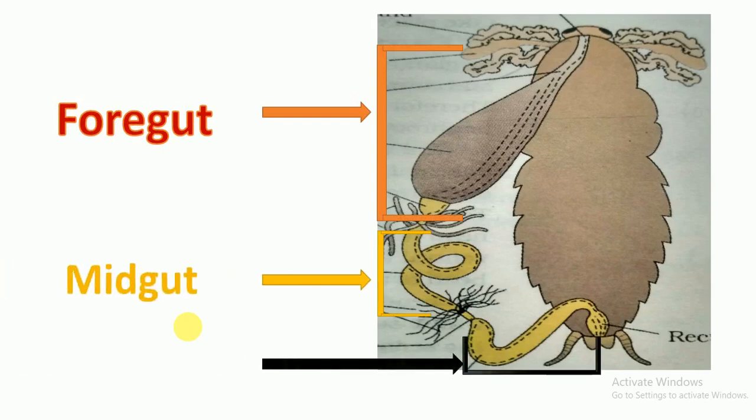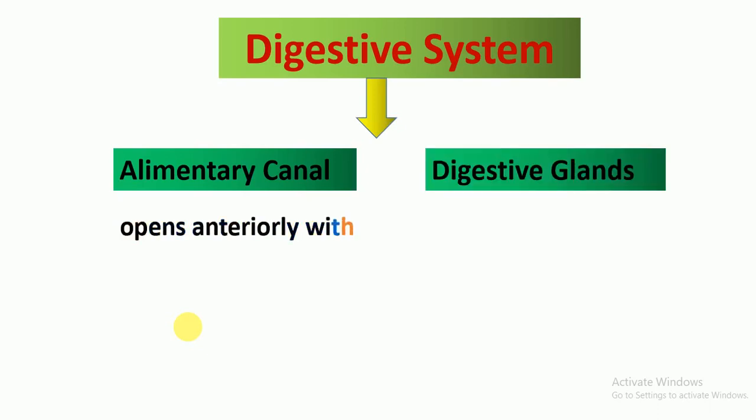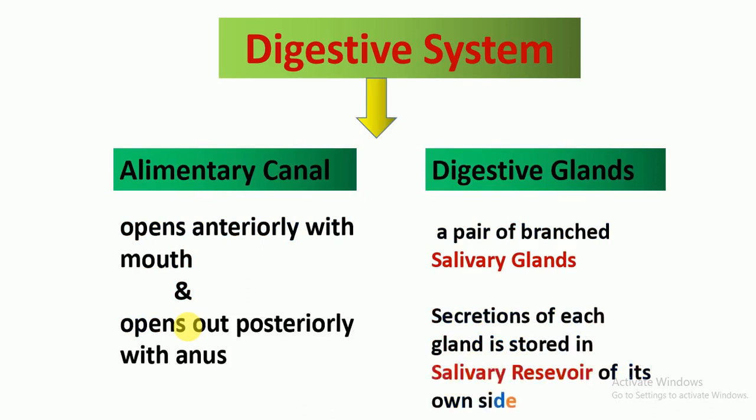The hindgut is broader than the midgut, and the diameter of the foregut varies. The alimentary canal opens anteriorly with the mouth and posteriorly with the anus. The digestive glands include a pair of branched salivary glands, and the secretion of each gland is stored in its own salivary reservoir.